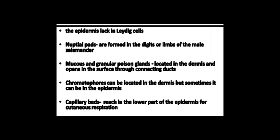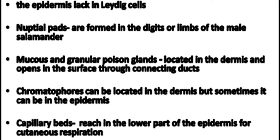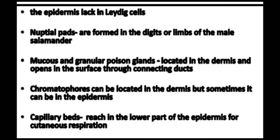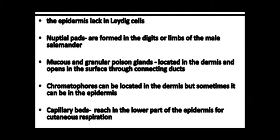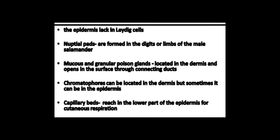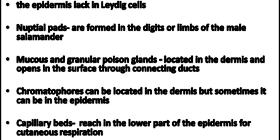There are also mucus and granular poison glands located in the dermis that open on the surface through connecting ducts. The chromatophores can be located in the dermis but sometimes can be in the epidermis. The capillary beds are also present, reaching into the lower part of the epidermis for cutaneous respiration. So the capillary beds are very important for cutaneous respiration.